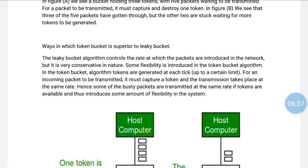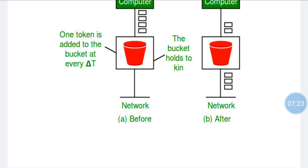Ways in which token bucket is superior to leaky bucket: the leaky bucket algorithm controls the rate at which packets are introduced into the network, but it is very conservative in nature. Some flexibility is introduced in the token bucket algorithm. Tokens are generated at each tick up to a certain limit. For an incoming packet to be transmitted, it must capture a token. Heavy packets are transmitted at the same rate if tokens are available, introducing some flexibility. These are the congestion control algorithms: the leaky bucket algorithm and the token bucket algorithm.